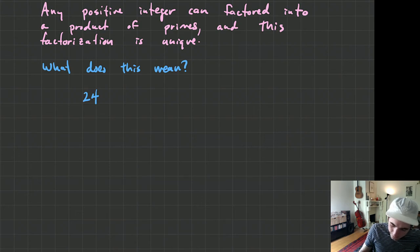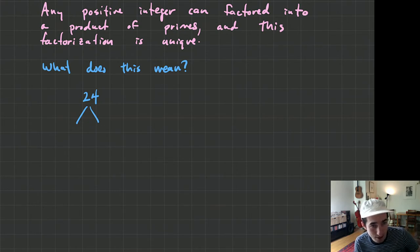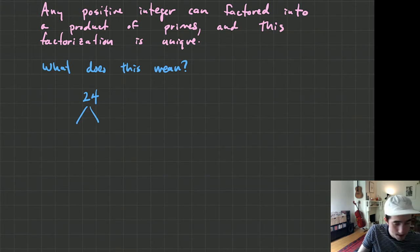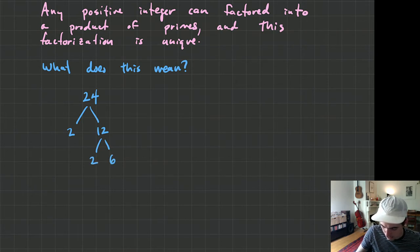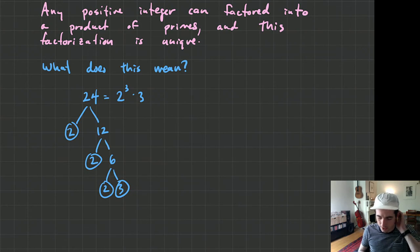Let's say we want to factor 24 with a factor tree. The Fundamental Theorem of Arithmetic tells us it does not matter which numbers we choose first. Most people choose two first: 2 × 12, then 2 × 6, then 2 × 3. So here's the prime factorization of 24: it's 2³ × 3.